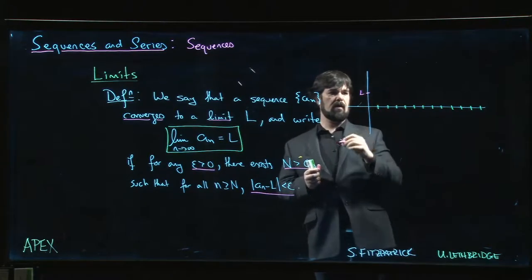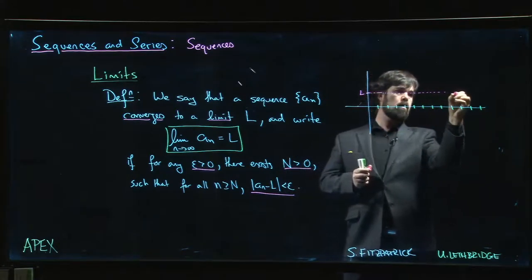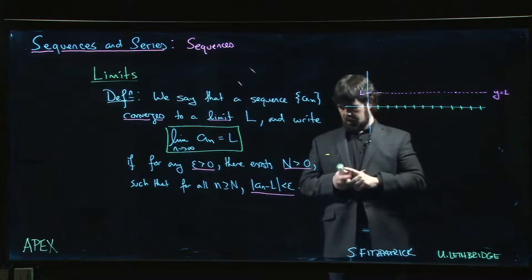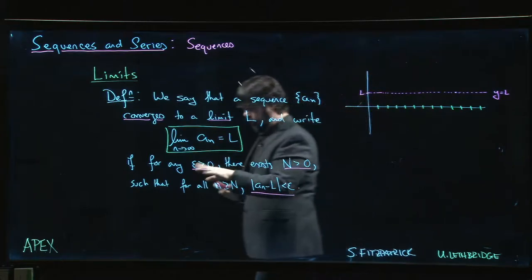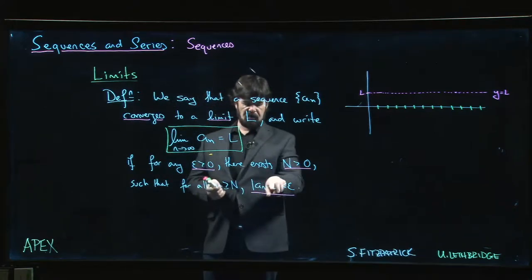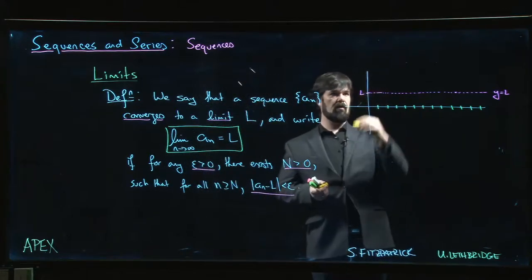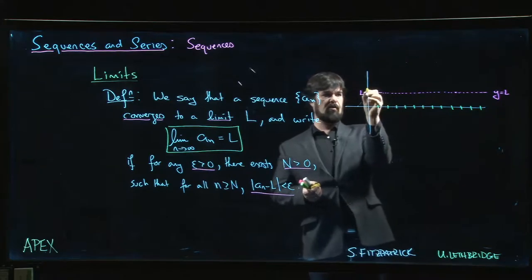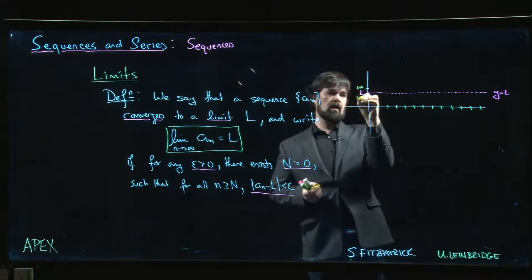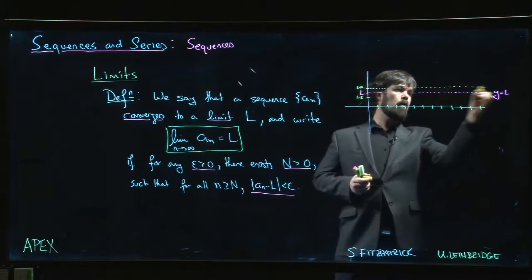All right, so we can mark our natural numbers down and we have some value L, so L is going to be the limit. Let me just draw that line in, y equals L. And epsilon here, think of epsilon as like an error. What we're saying is that the difference between terms in the sequence and the limit will be small. So we can choose a large epsilon but typically we think of that as a small epsilon. So here's L plus epsilon, here's L minus epsilon.